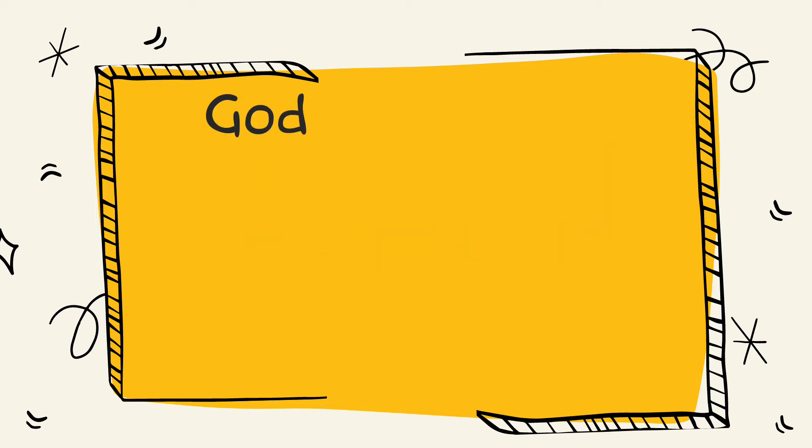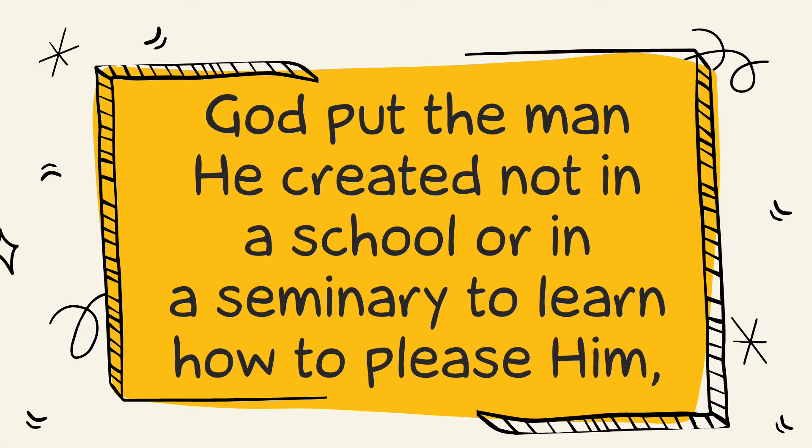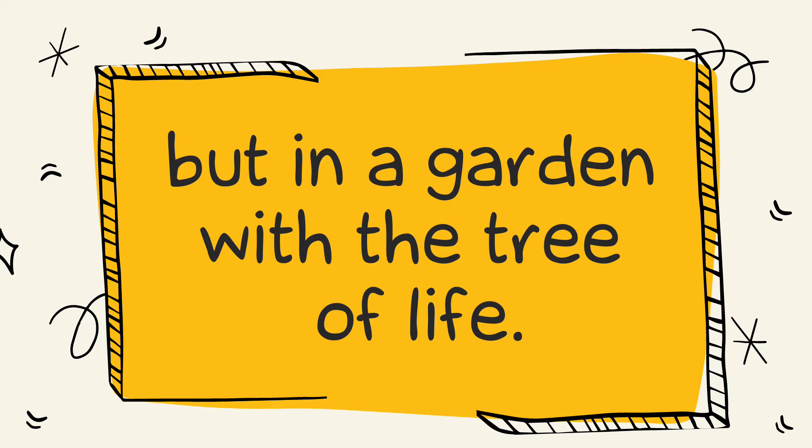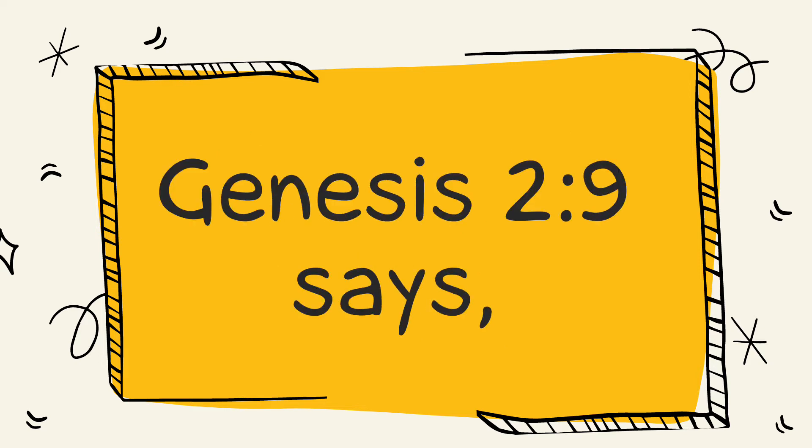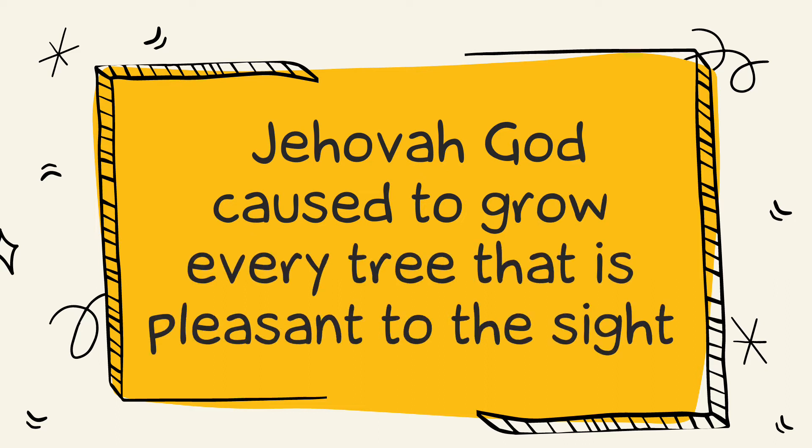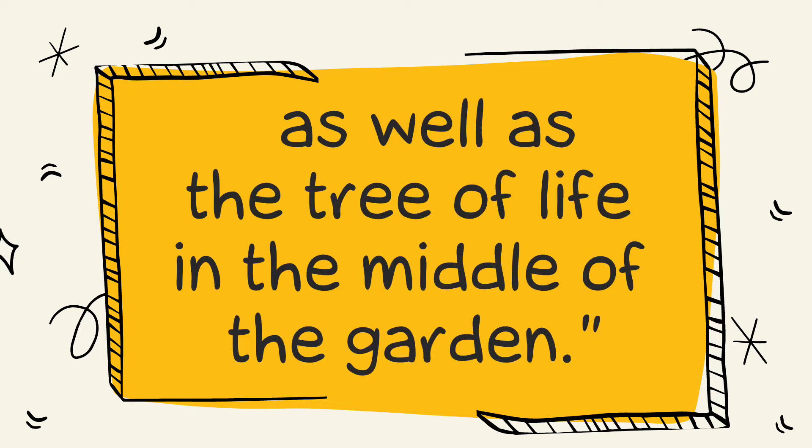In Genesis, God put the man He created not in a school or in a seminary to learn how to please Him, but in a garden with the tree of life. Genesis 2:9 says, And out of the ground, Jehovah God caused to grow every tree that is pleasant to the sight and good for food, as well as the tree of life in the middle of the garden.